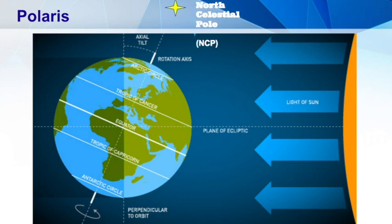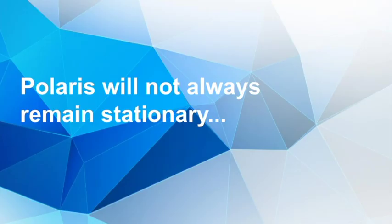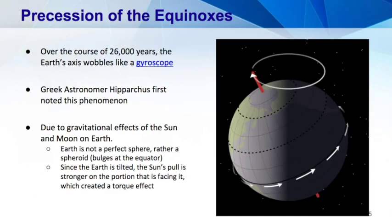Sometimes we call this the north celestial pole. But Polaris will not always appear to remain stationary in our sky. In order to understand why the north star will not always remain the star above the north celestial pole...